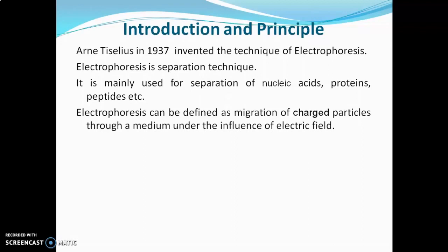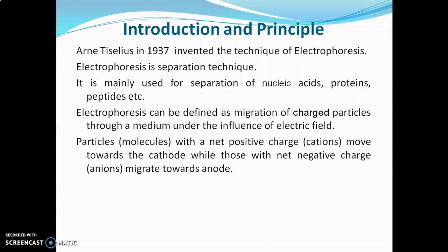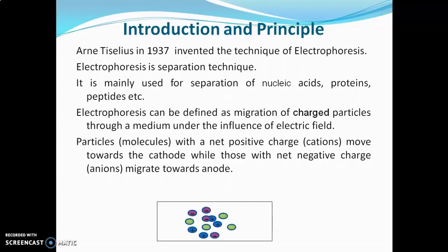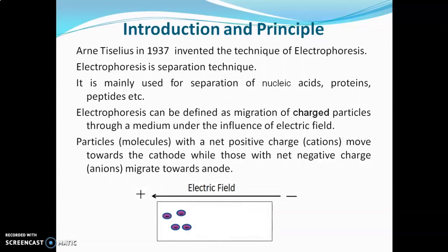Electrophoresis can be defined as migration of charged particles through a medium under the influence of an electric field. Particles or molecules with net positive charge will move towards the cathode, and particles or molecules with net negative charge will migrate towards the anode. For example, if we place a sample which is a mixture of cations, anions, and neutral ions in a support medium or solution and apply the electric field, the particles will start migrating. Anions will move towards the anode, cations towards the cathode, and neutral ions will not show any migration.